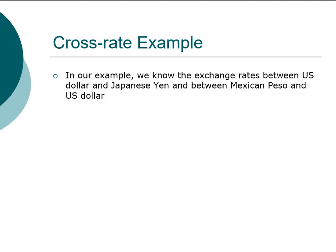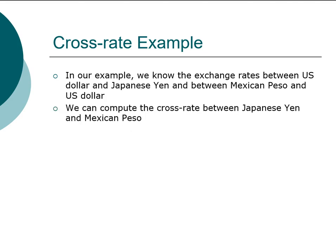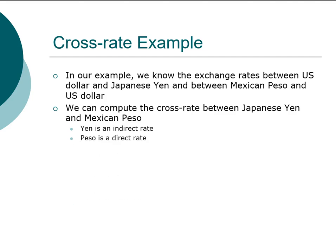Let's look at an example for cross rate between Japanese yen and Mexican peso. We're going to compute the exchange rate — the cross rate — directly between the two currencies. The yen was quoted as an indirect rate in our example and the peso is quoted as a direct rate in our example.